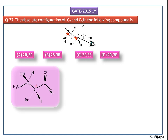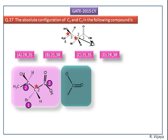First we assign the RS configuration for the second carbon atom. Here bromine has the higher priority. The second priority goes to the two carbon atoms, so we have to consider the carbon chains of these two carbon atoms.